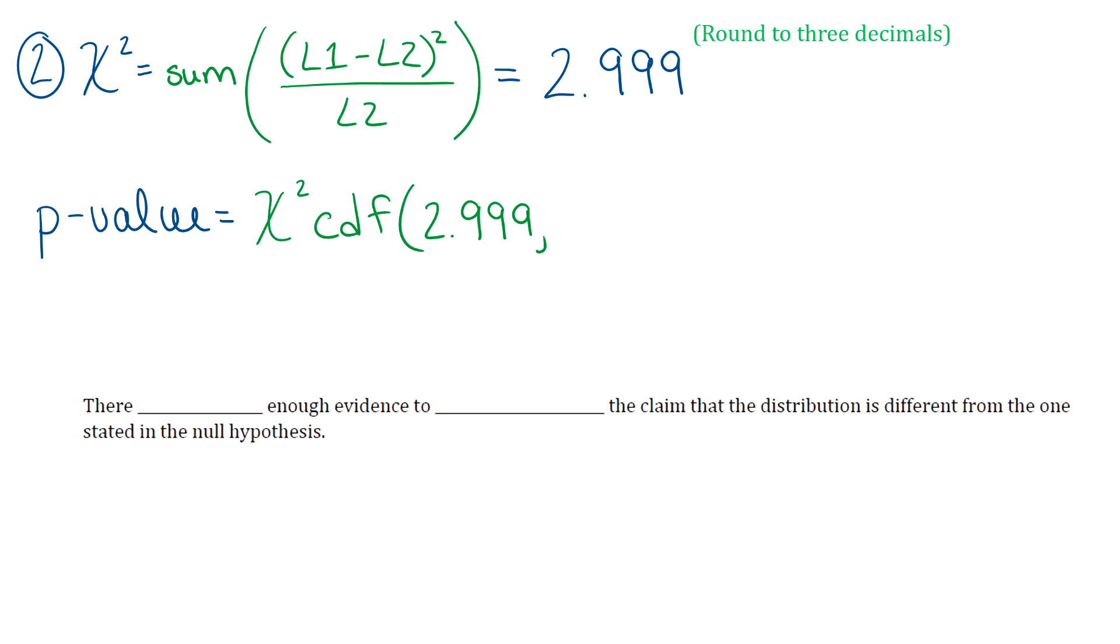And then you need to tell it the lower bound, the upper bound, and degrees of freedom. So the lower bound is always going to be whatever that chi-square value is. So 2.999. And then the upper bound is never going to change. That's always positive infinity. So you're always going to put E99 there. And then you just have to remember that degrees of freedom for the goodness of fit test is the number of categories minus one. So there were three categories in this question. So degrees of freedom is going to be two. So you'll put a two into that last input spot.